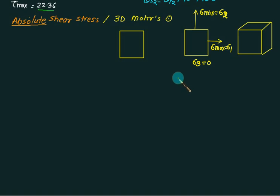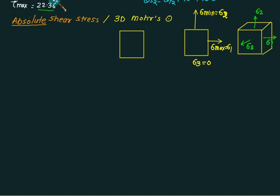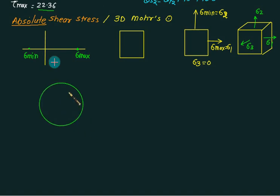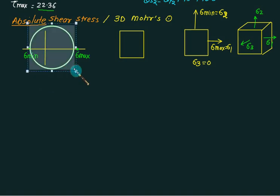Regardless of the values of sigma one and sigma two, sigma three is always zero, acting on the z-face. We can draw a Mohr circle using sigma one and sigma two, another using sigma one and sigma three, and determine the center point from the known diameter. We are collecting the absolute shear, looking at sigma max and sigma minimum, joining those two points to represent each Mohr circle. Only two values are required for each circle.